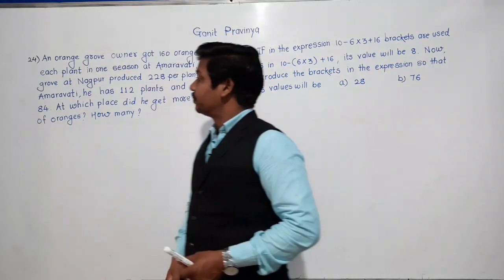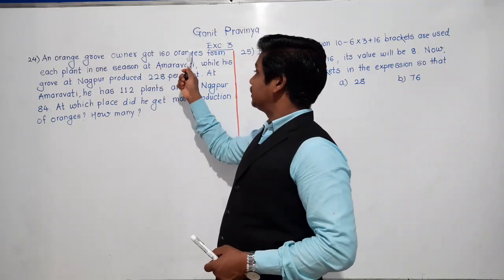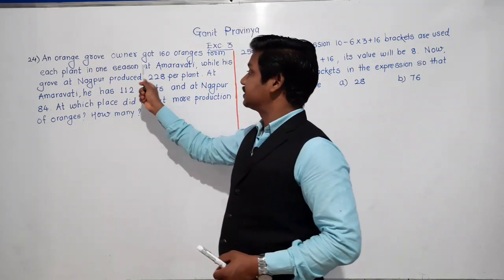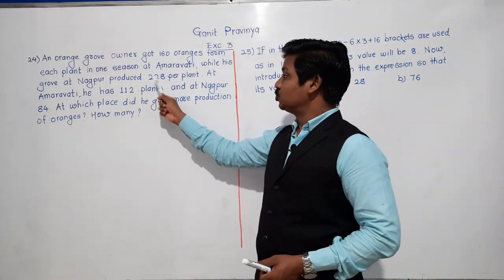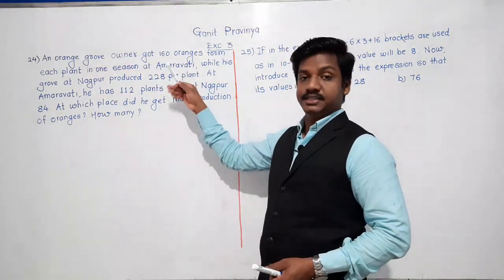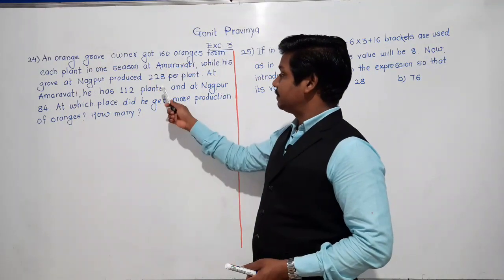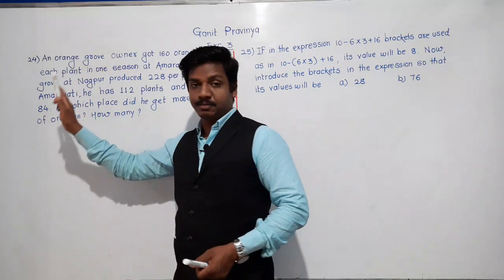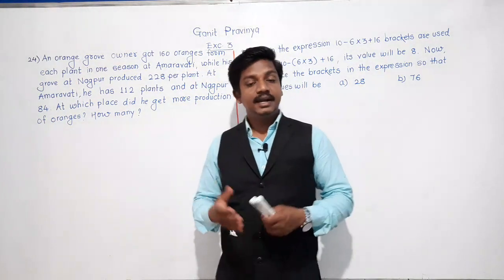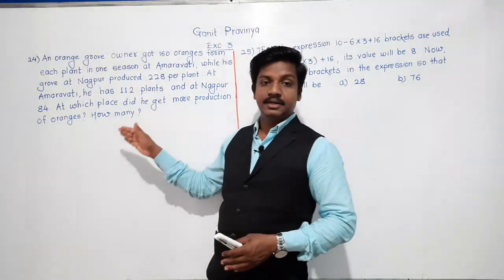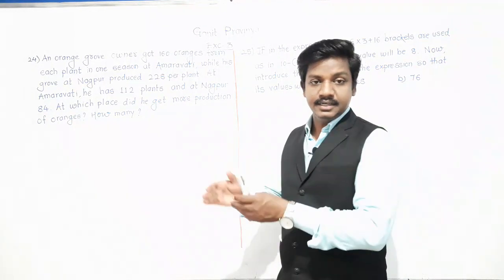An orange grove owner got 160 oranges from each plant in one season at Amravati, while his grove at Nagpur produced 228 oranges per plant. At Amravati he has 112 plants and at Nagpur 84 plants. At which place did he get more production of oranges and by how many?